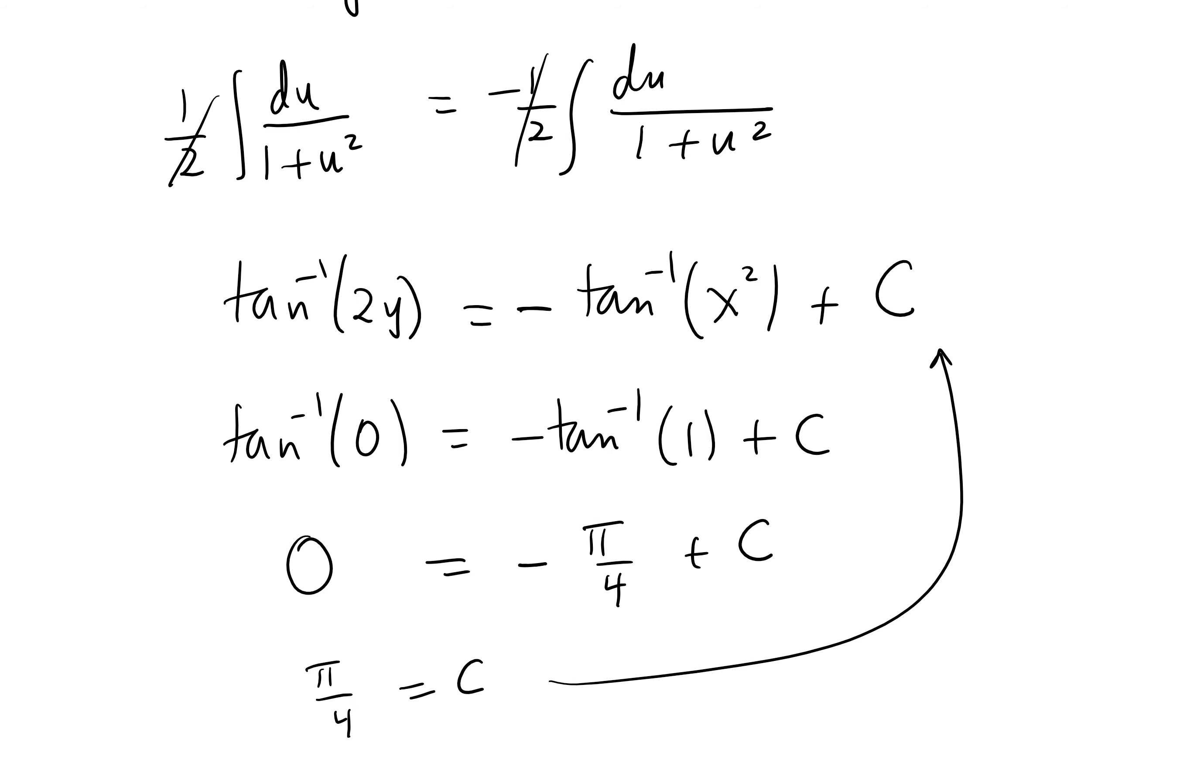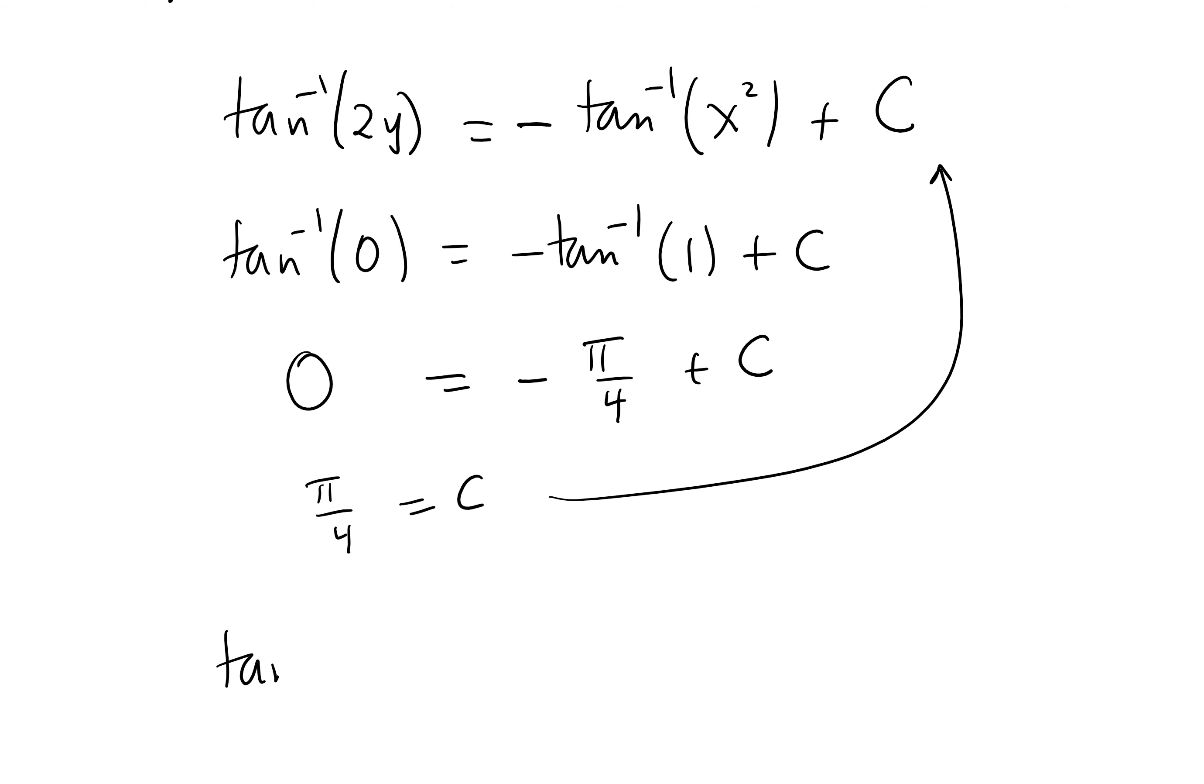And then we substitute it back into this equation. So we get tan inverse of 2y equals negative tan inverse of x squared plus pi over 4. Any questions about this?